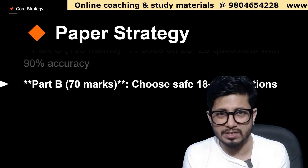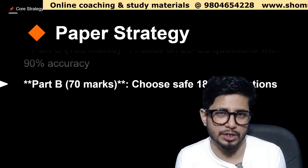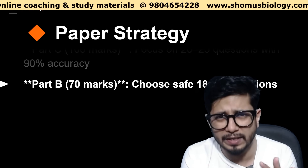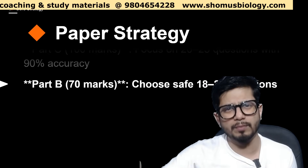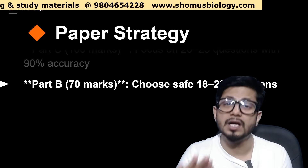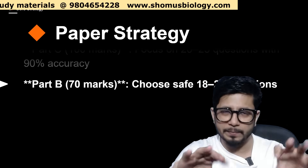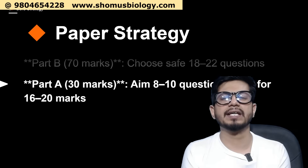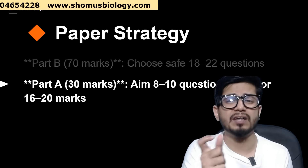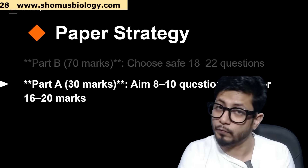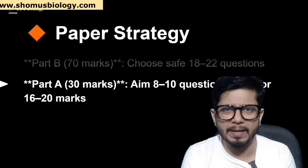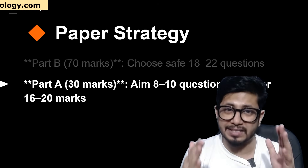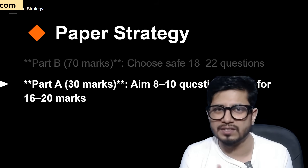Next is Part B, where there are 70 total marks. You need to answer 18 to 22 questions. If you score even 15 questions correct, you will get 30 marks, and considering negative marking, even 25 to 28 marks is good enough. Along with Part C and Part B, you are close to reaching 120 marks. For Part A, there are 30 marks, and 8 to 10 questions are very easy. You don't need to rely on mathematical questions — just go into reasoning, aptitude-based, and IQ-style questions, which you can solve with basic skill, easily answering 8 to 10 correctly for 16 to 20 marks.